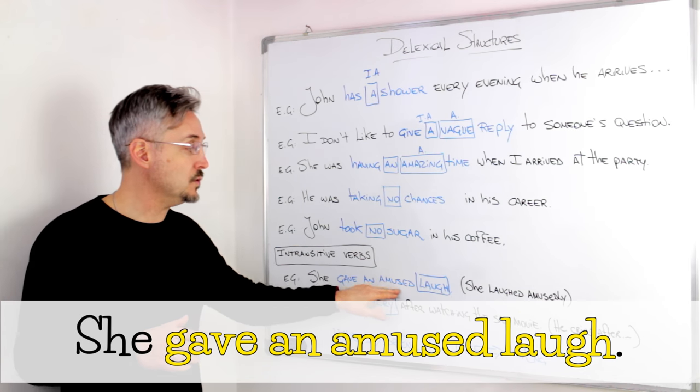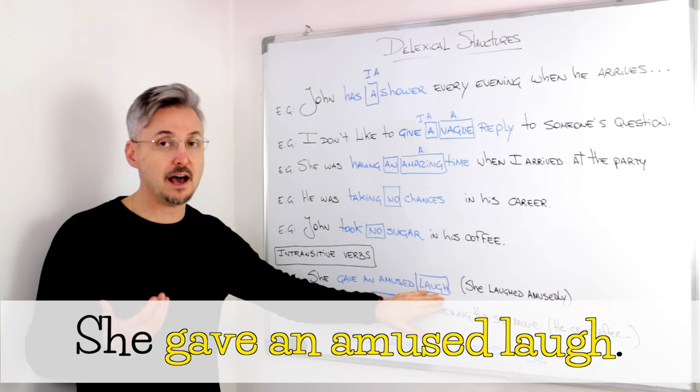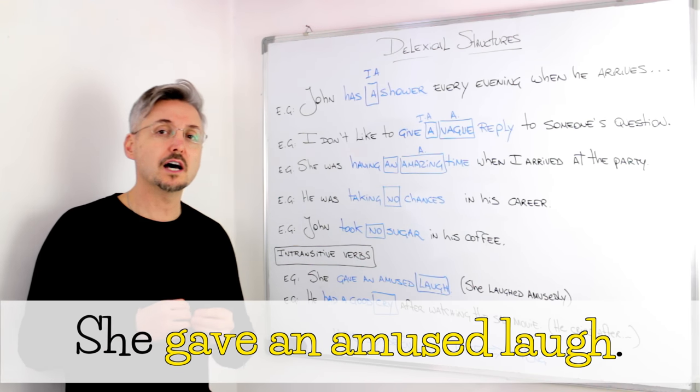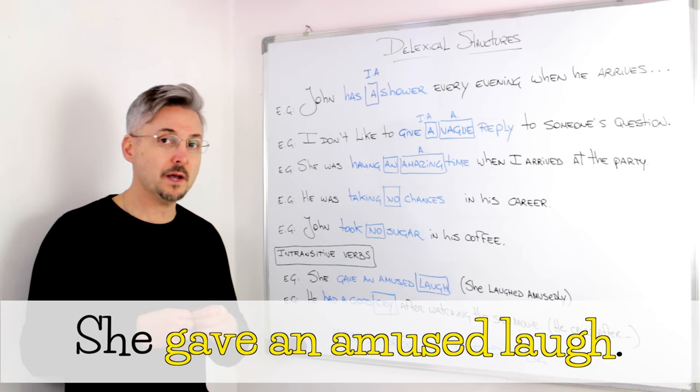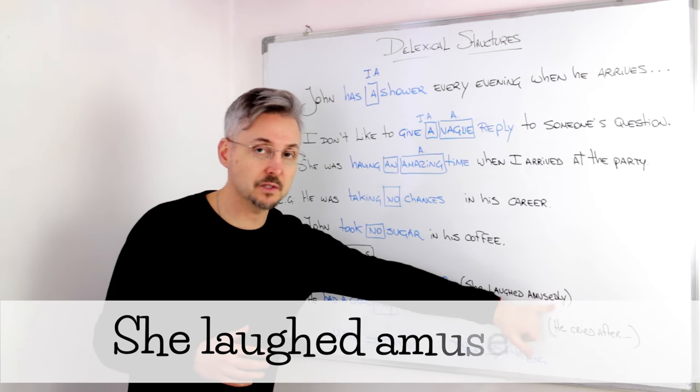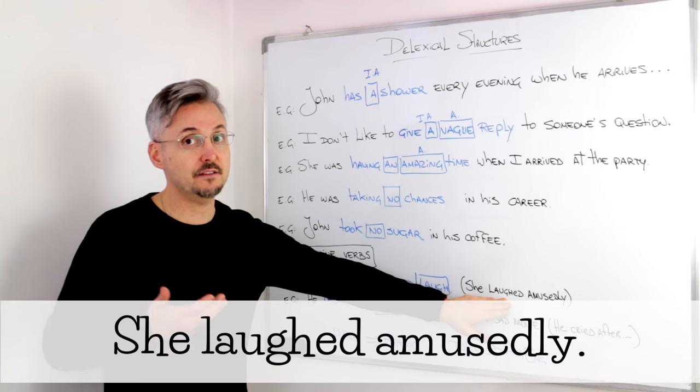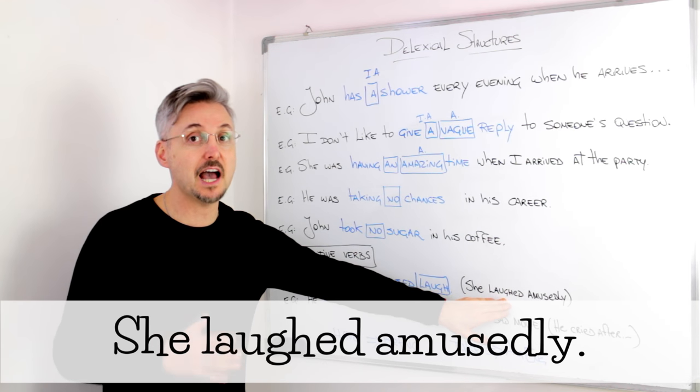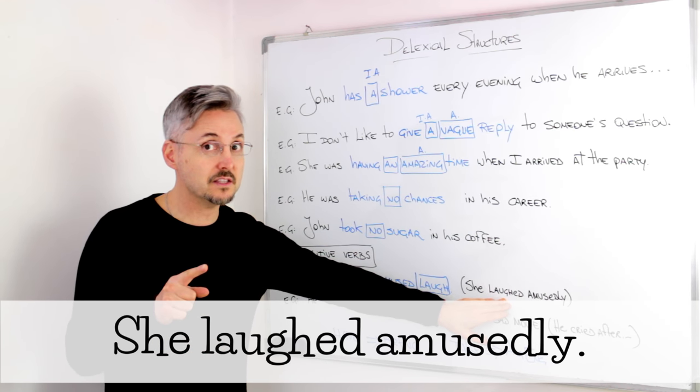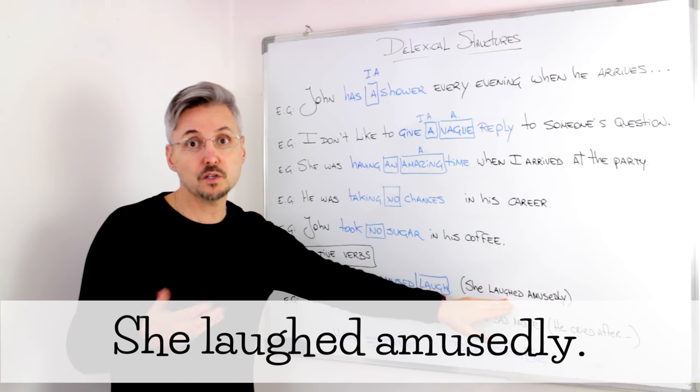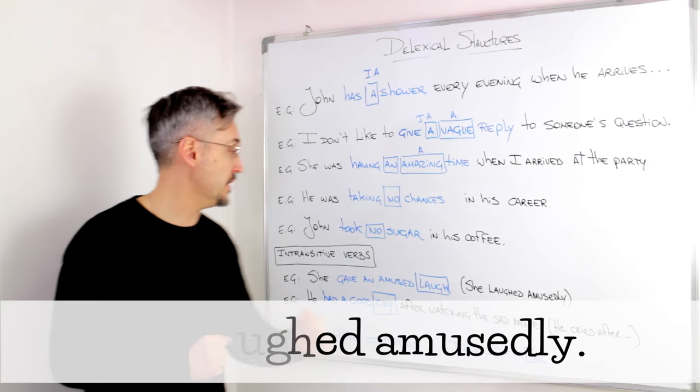In this case, laugh is a noun. But if I wanted to turn it into a verb, I could have said, she laughed amusingly. Laughed, in this case, is an intransitive verb. It doesn't take an object. There is a lesson on that. You can click here if you want to watch that lesson right there.